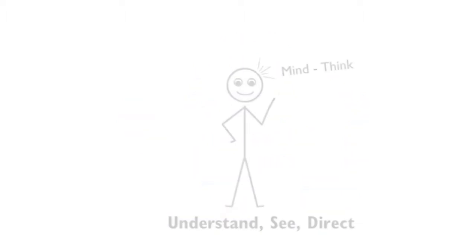Next, we have the rider. Now, the rider is where you understand, it's where you see and direct. It's really all about thinking. It's about your head. So we have the heart and the head. And finally, we have the environment.